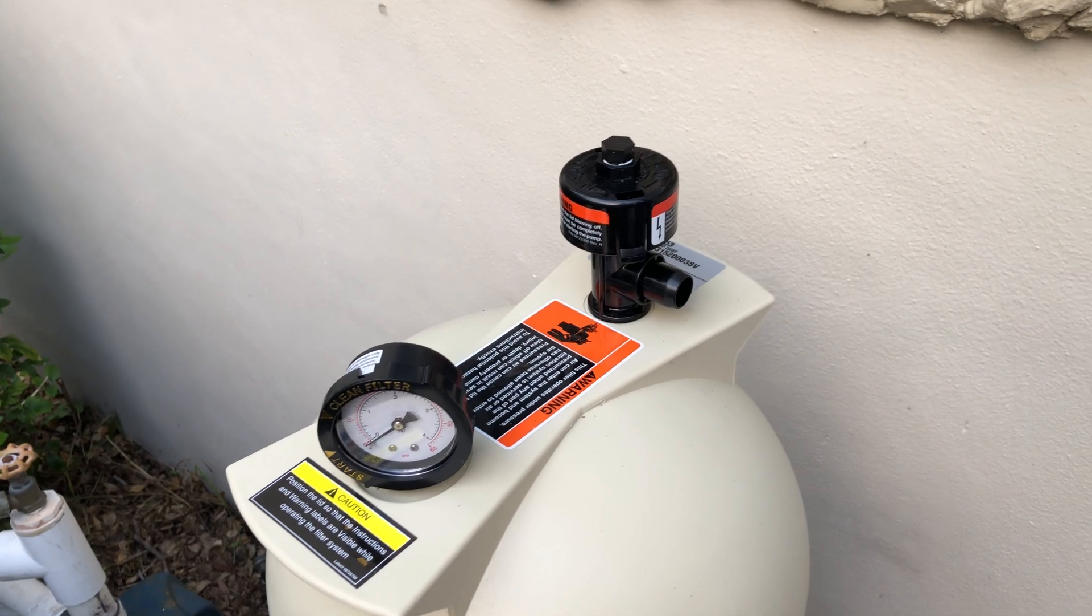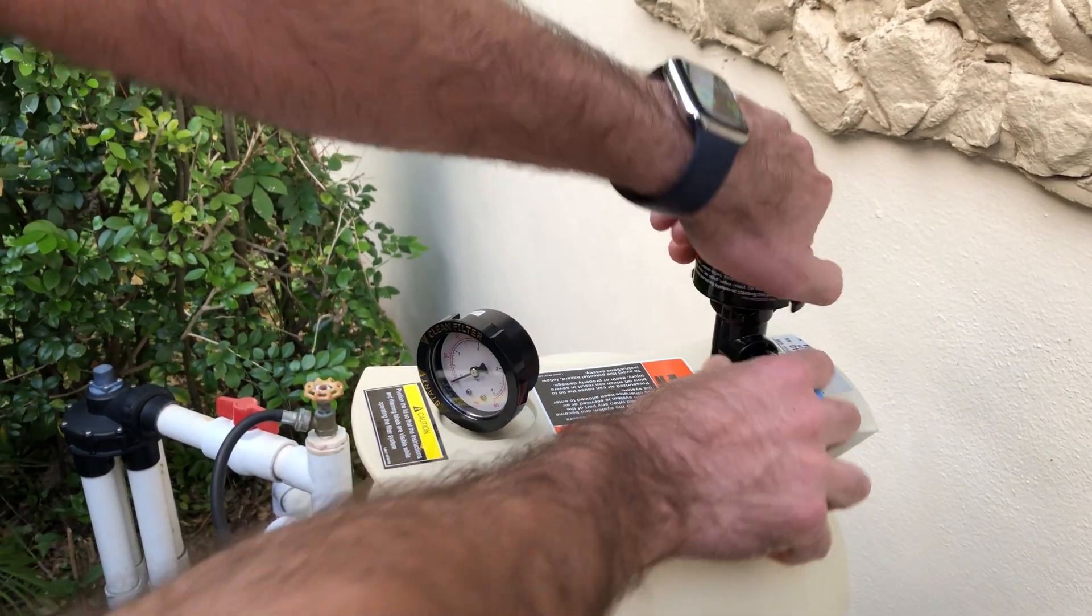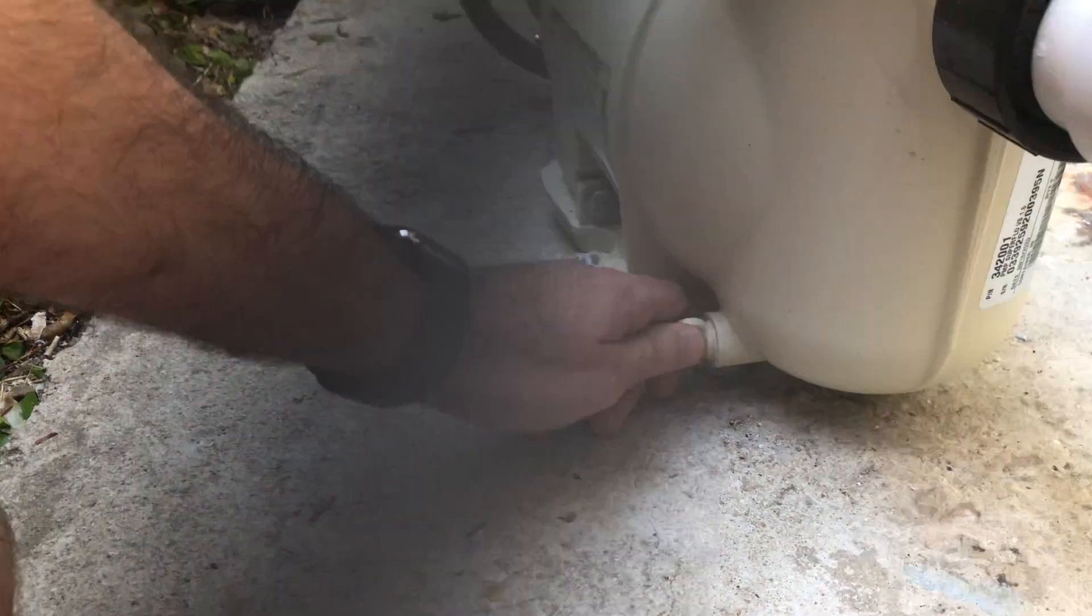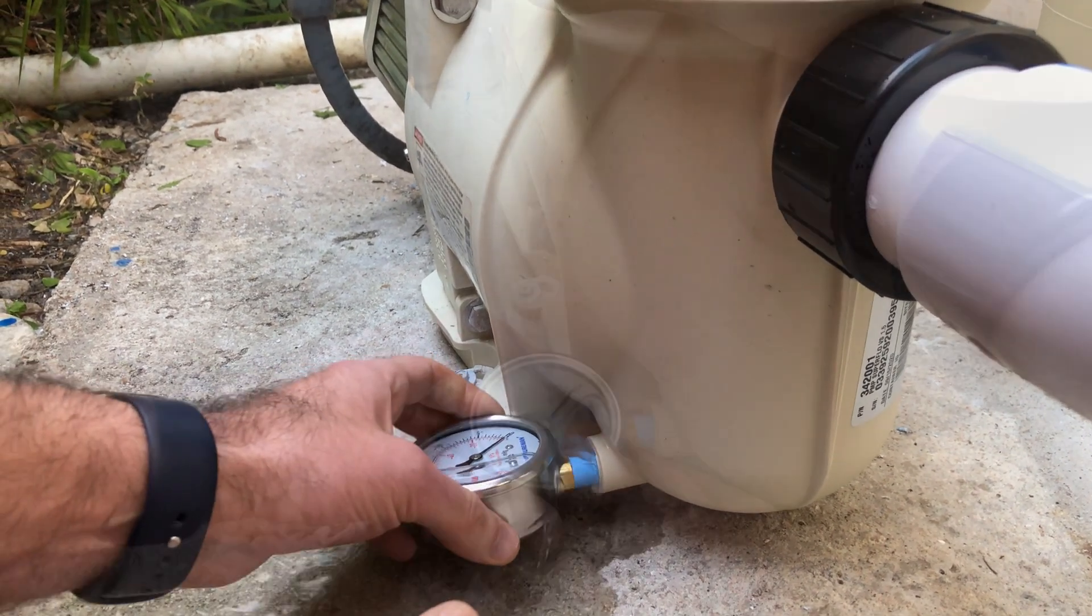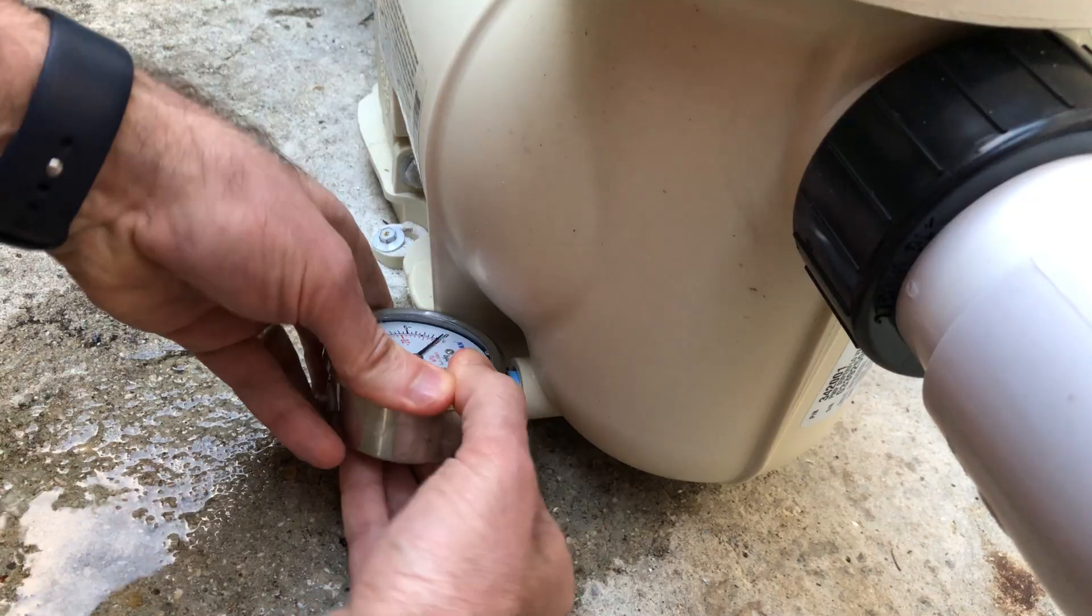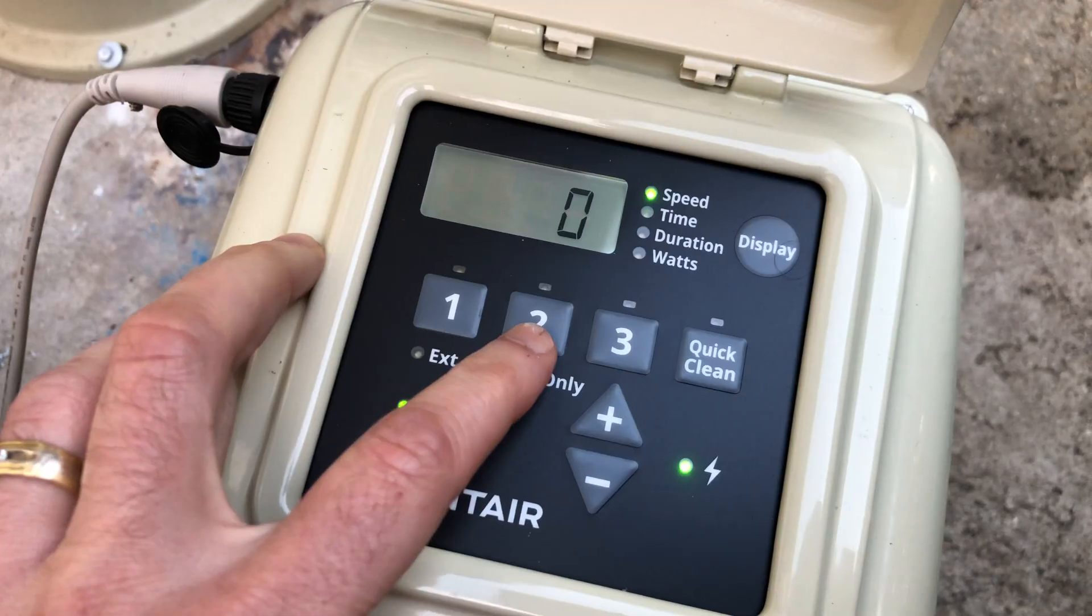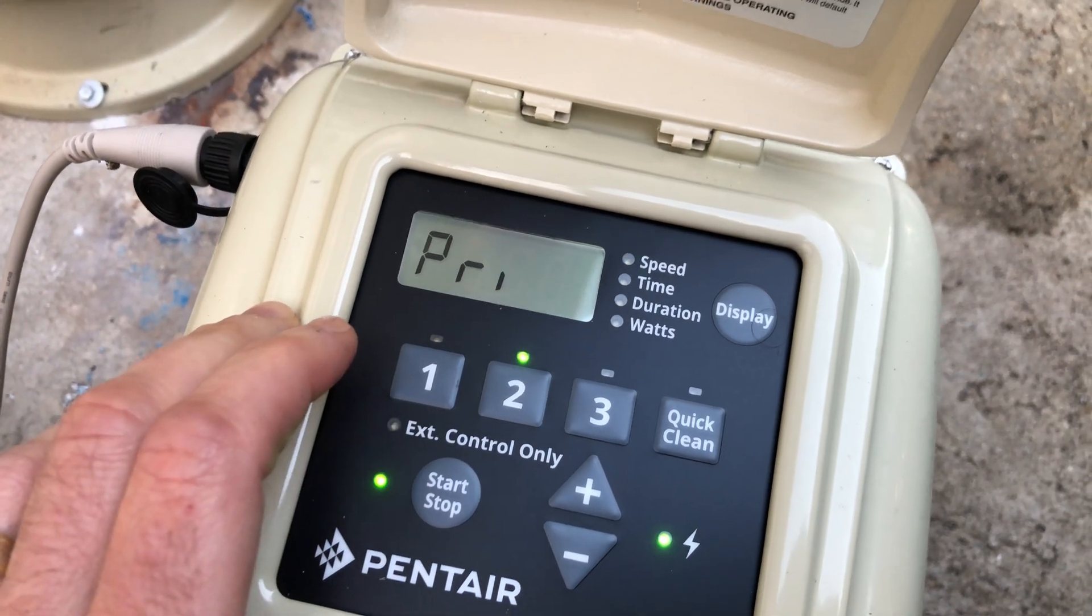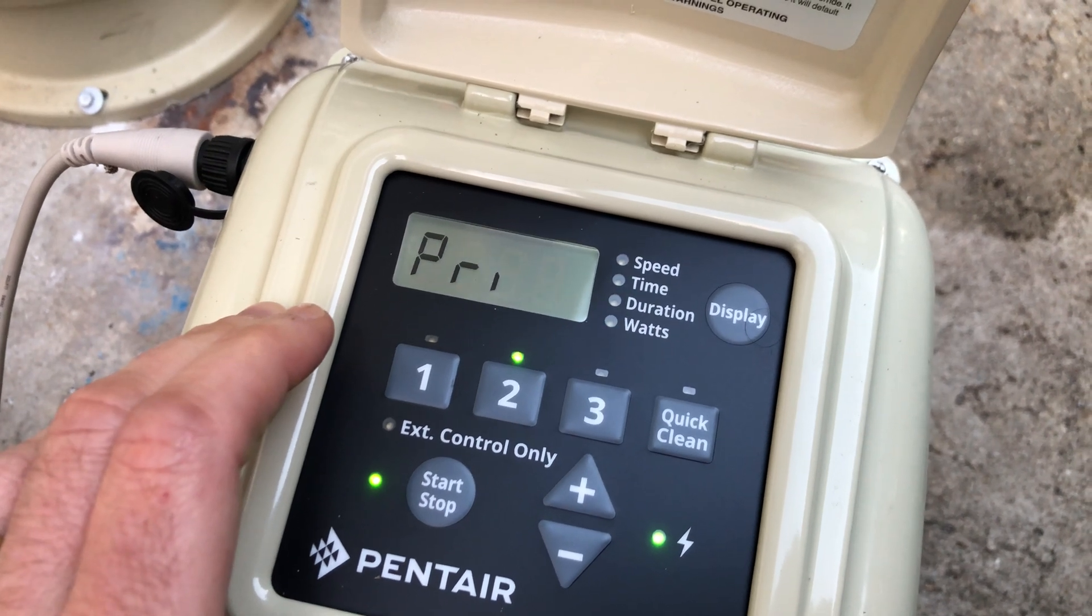So let's go ahead and get started by relieving the pressure in the system. Now I'm just going to go ahead and unscrew this drain cap. Alright, so now here at the pump I'm going to set it to speed 2. So it's going to start priming, and then it should go into 3,000 RPM once it's done, and I'll check my readings after that.